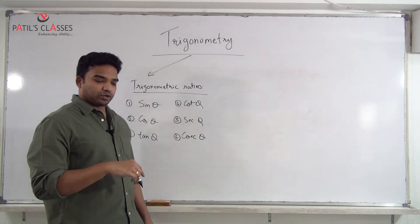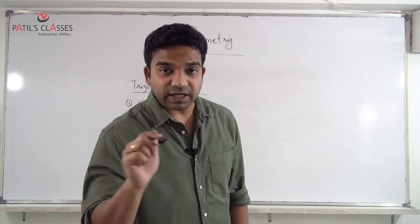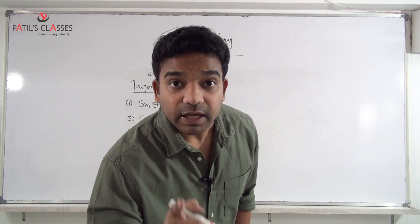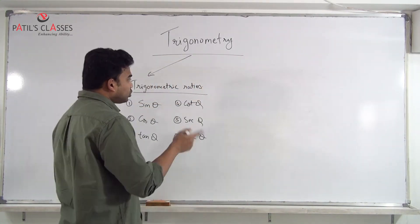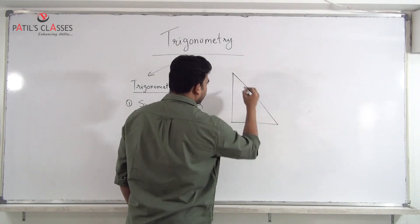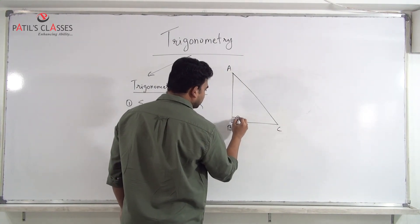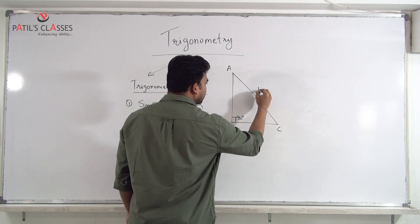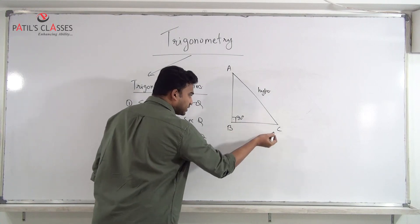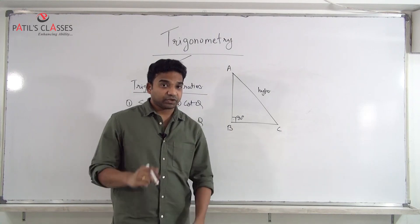These six trigonometric ratios are defined as ratios of the sides of a right angle triangle. To introduce them I will use a right angle triangle ABC in which this angle is 90°. The side opposite to 90° is known as the hypotenuse, and the other two sides are named according to theta.